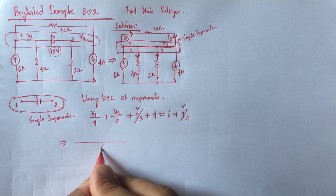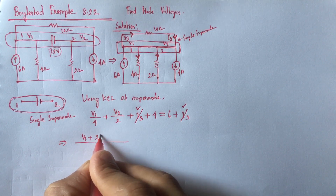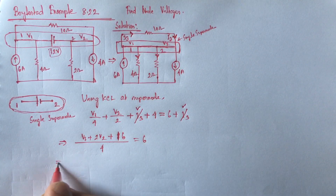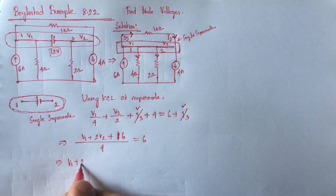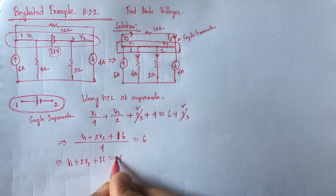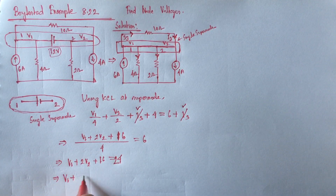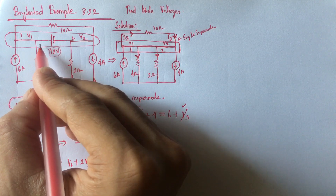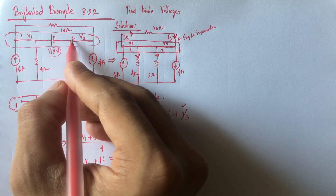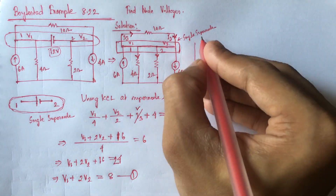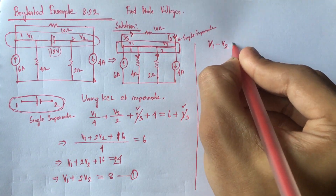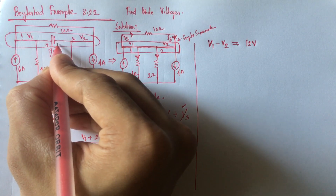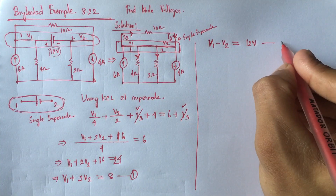Simplifying the equation we have: V1 over 4 plus V2 over 2 plus 4 equals 6, which gives us equation 1. Also, from the voltage source constraint, V1 minus V2 equals 12 volts — this is positive because the positive end is at node 1 and the negative end is at node 2. Let this be equation 2.